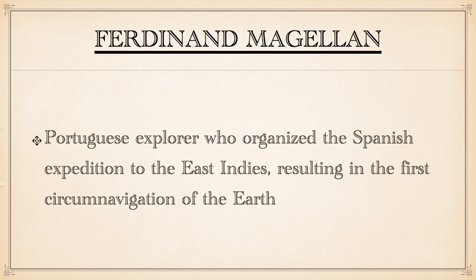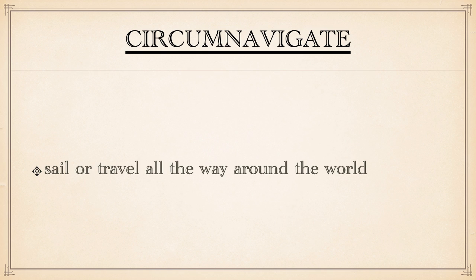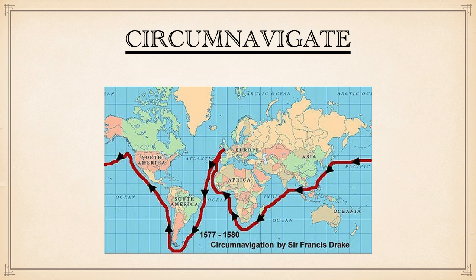In other words, he was the first one to sail completely around the globe. Circumnavigate means to sail or travel all the way around the world, and Ferdinand Magellan is the first one to document it successfully.